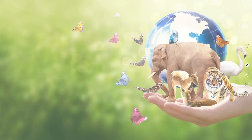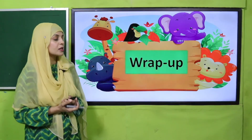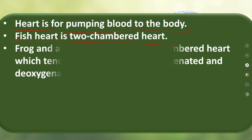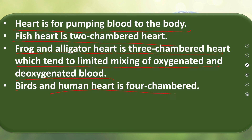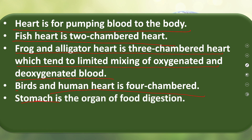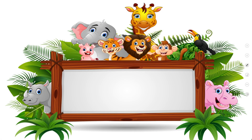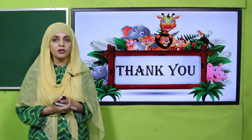For homework, do question number five from section C about heart and stomach in your notebooks. Wrap-up: today we learned that the heart pumps blood to the body. Fish heart is two-chambered; frog and alligator heart is three-chambered, which limits mixing of oxygenated and deoxygenated blood; bird and human heart is four-chambered. The stomach is the organ of food digestion; birds have a stomach with two parts — glandular stomach and gizzard. I hope you now know about these two body parts. Keep everybody around you safe. Thank you and Allah Hafiz.